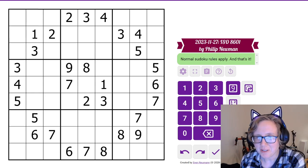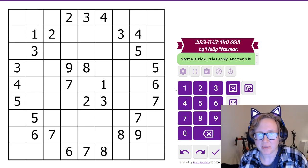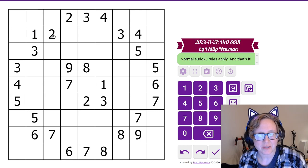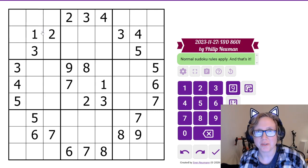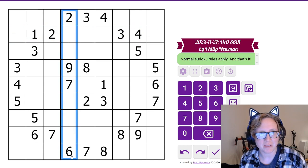This is the solution walkthrough for the November 27th, 2023 GAS ISO 8601 by Philip Newman. It is a classic Sudoku, so we just have normal Sudoku rules. Digits appear exactly once in each row, column, and region.